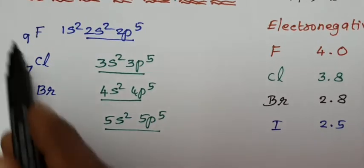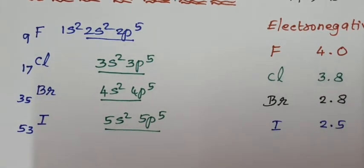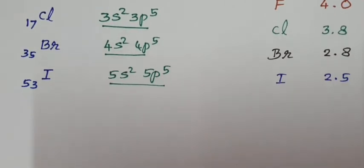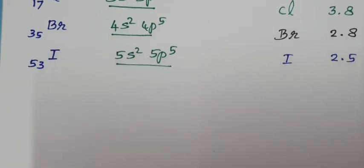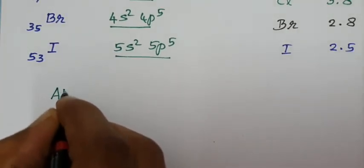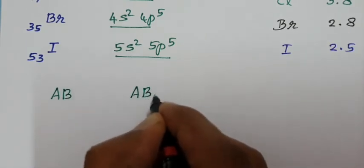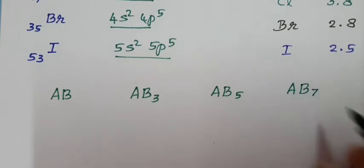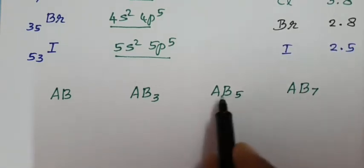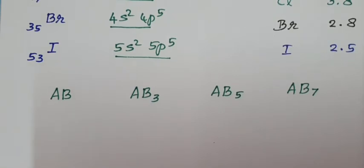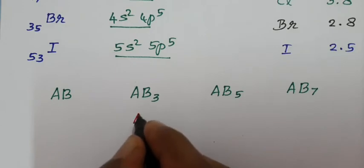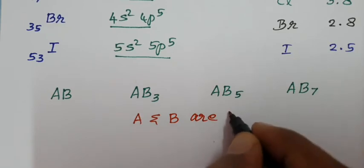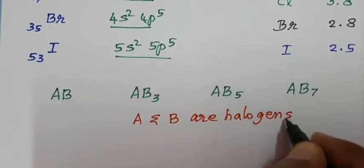Halogens combine with each other to form interhalogen compounds of the types AB, AB3, AB5, and AB7. In all these compounds, remember that both A and B are halogens only.